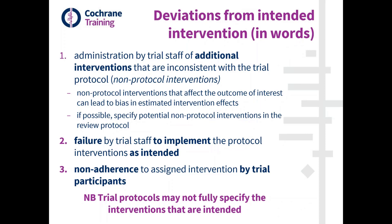The first area is administration of additional interventions by trial staff — we call these non-protocol interventions. They are interventions not in accordance with the intended protocol, and they will introduce bias in some circumstances if they affect the outcome. If it's possible to specify the sorts of non-protocol interventions we're looking out for, we should do that in the protocol. The second area is failure of trial staff to implement the protocol interventions as intended, and the third area is non-adherence by trial participants to their assigned intervention.